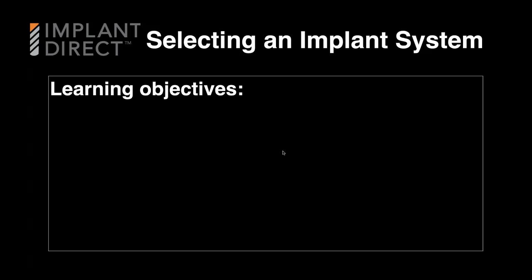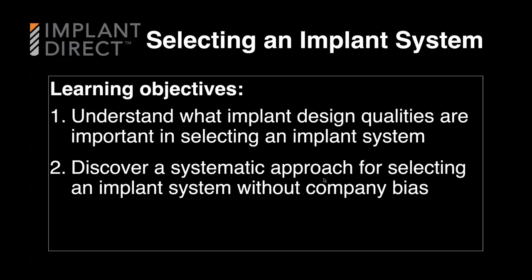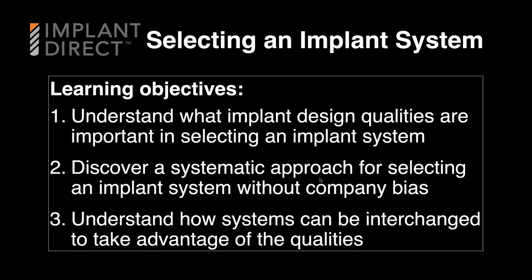Today we're talking about selecting an implant system. Our objectives are to understand what implant design qualities are important in selecting a system, and to discover a systematic approach for selecting an implant system without company bias. We also want to understand how systems can be interchanged to take advantage of their qualities — some can, some cannot.